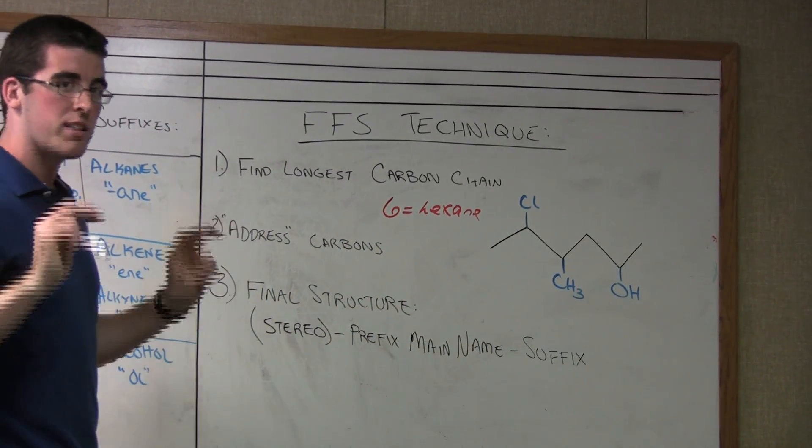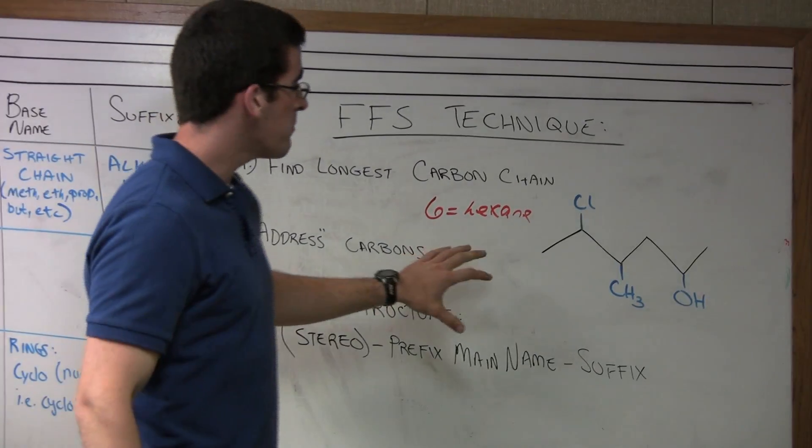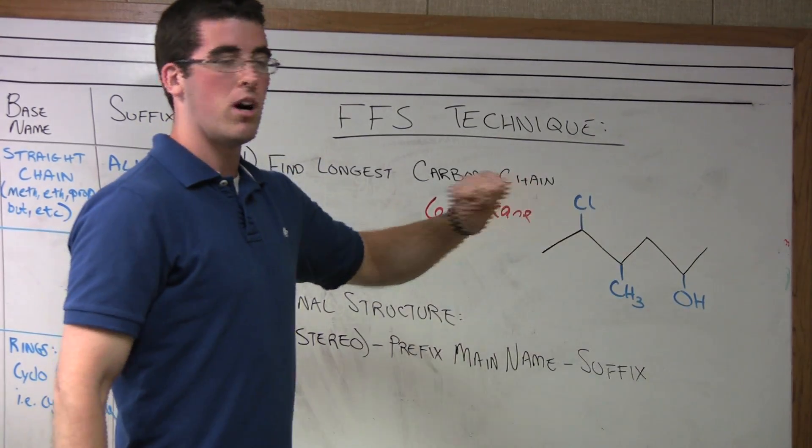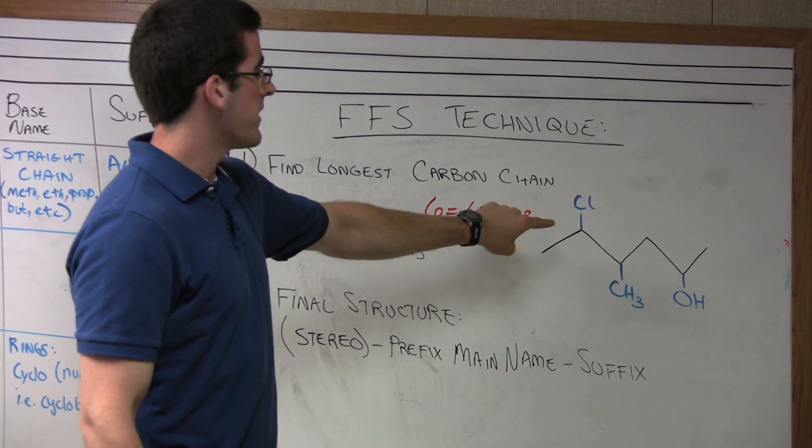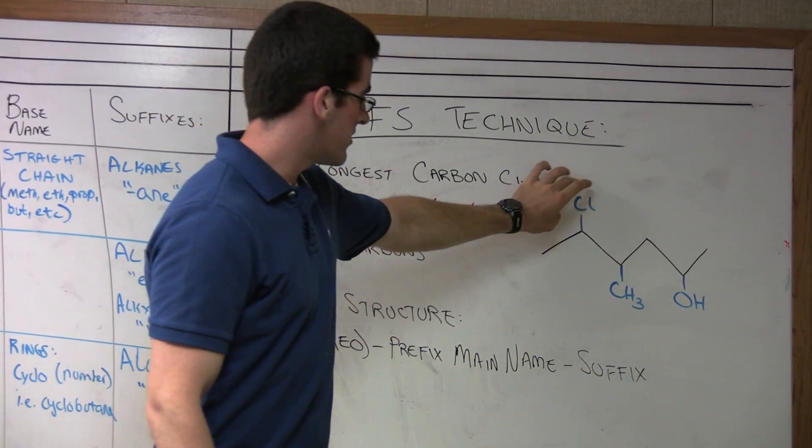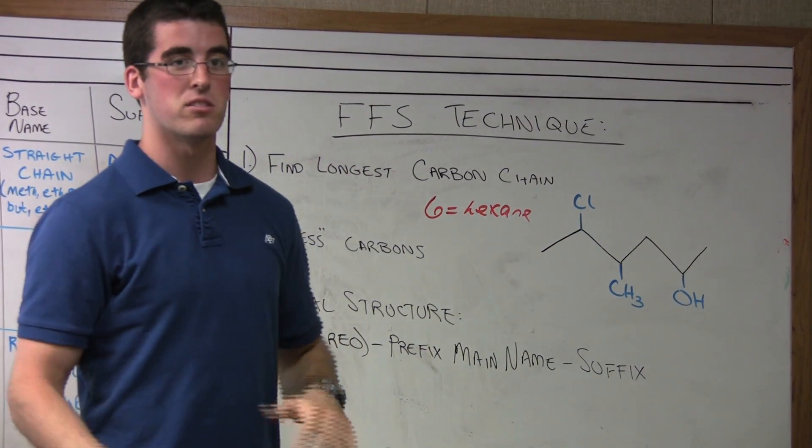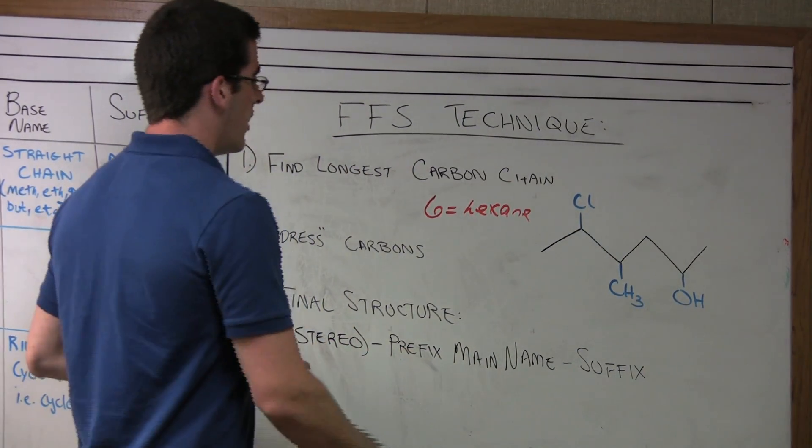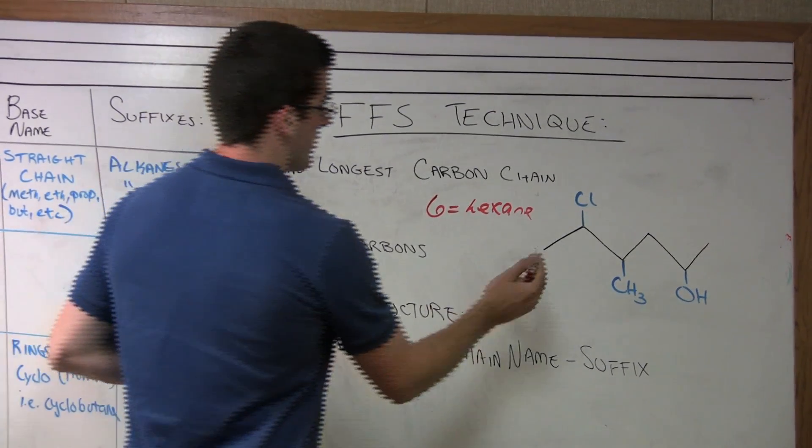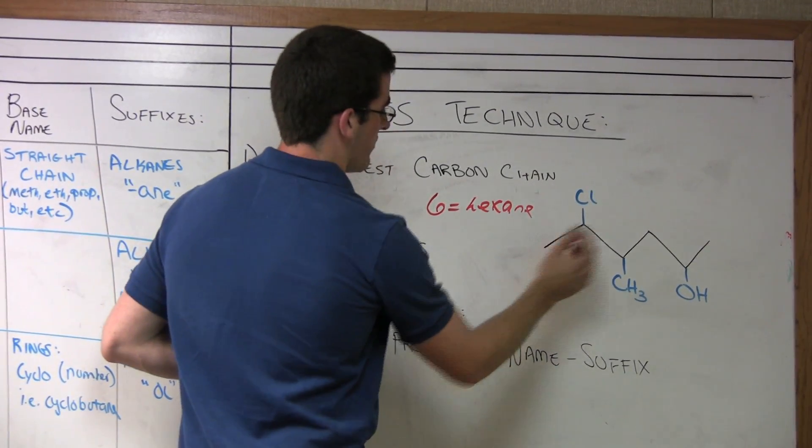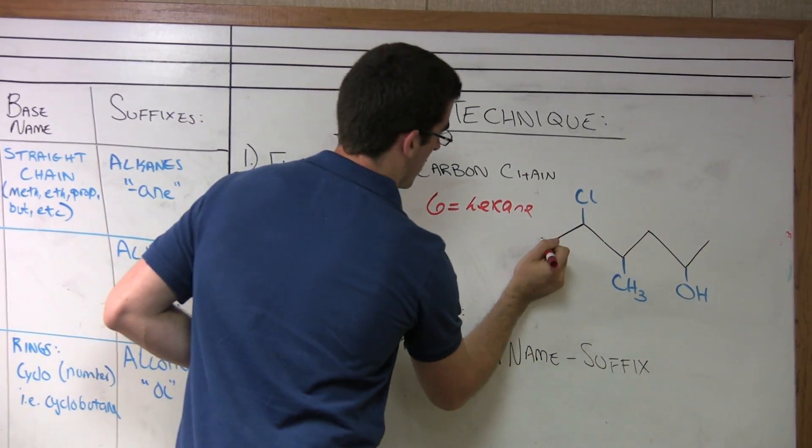we're going to address the carbons. This means we're going to number this base chain, giving these substituents—the Cl, the methyl, the alcohol—addresses, which means they'll have numbers on the carbon. We can do this two ways: number from left to right or from right to left. Numbering from left to right,